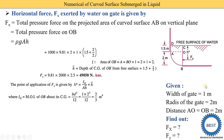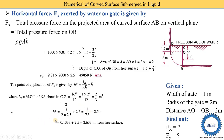Substituting into the H-star equation: H-star = (2/3) / (2 × 2.5) + 2.5 = (2/3)/5 + 2.5 = 2.633 meters from the free surface. We already know that H-star is always below H-bar. Our H-bar is 2.5 m and H-star is 2.633 m, confirming the answer is correct according to theory.